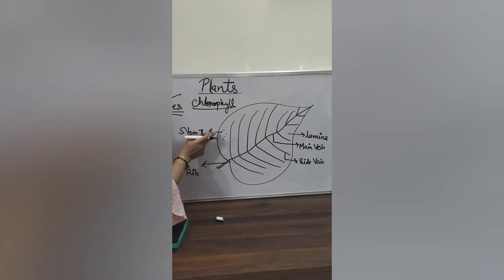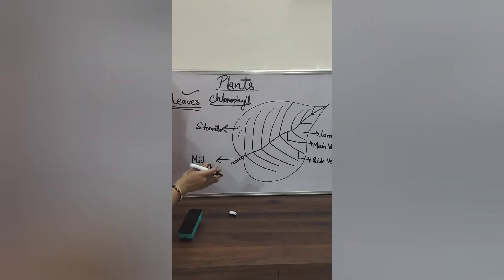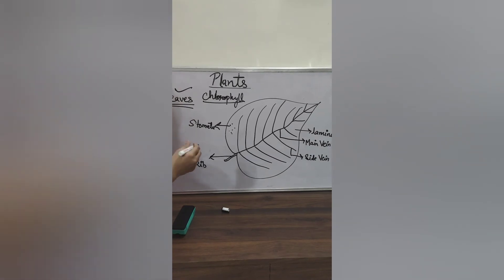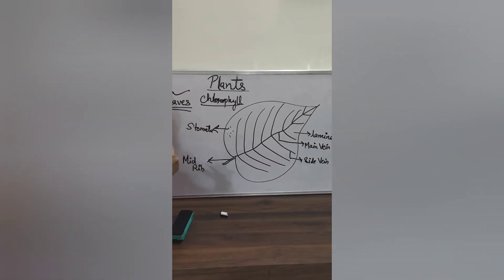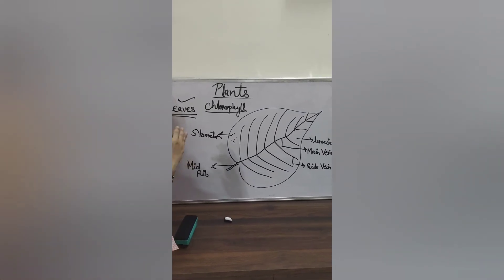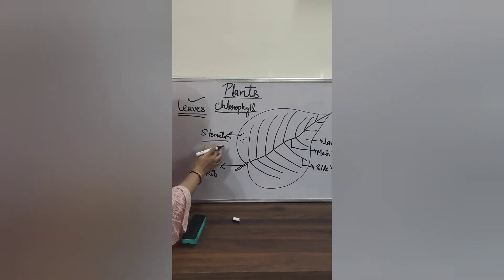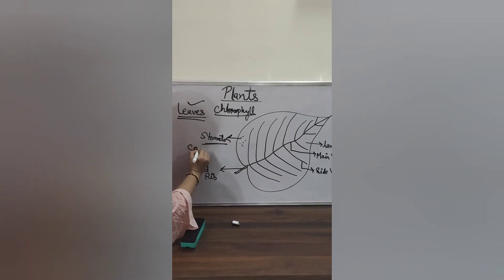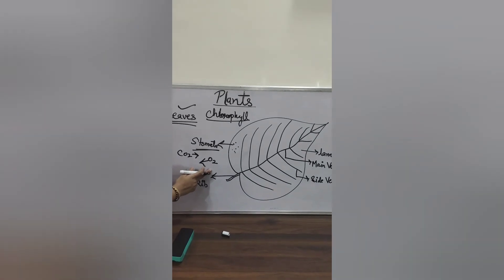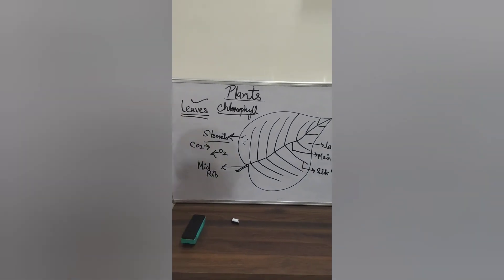Due to the presence of chlorophyll, green plants can produce their own food in the presence of sunlight, water, and carbon dioxide — this process is called photosynthesis. The roots absorb water from the soil and the stem carries it to the leaves. Stem acts as a transporting agent. When light falls on the leaves, it is absorbed by the chlorophyll. Then through stomata, the leaves take in CO2 and give out O2. This is how green plants produce food, which is stored in the form of glucose or starch in the leaves, roots, and stems.